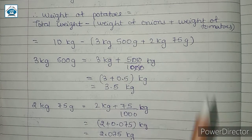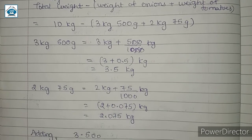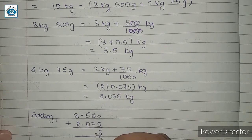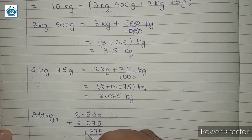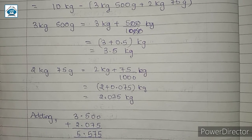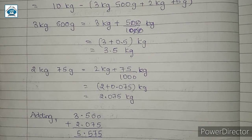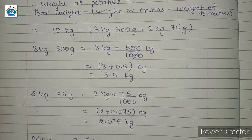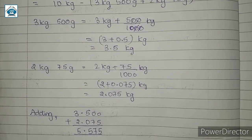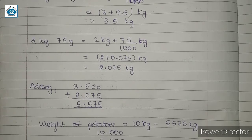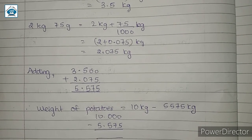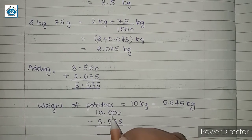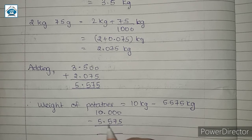Adding 3.500 and 2.075: 0 plus 5 is 5, 0 plus 7 is 7, and 5 plus 0 is 5. So the total is 5.575 kg. Therefore, the weight of potatoes equals 10 kg minus 5.575 kg. We arrange this as 10.000 minus 5.575.